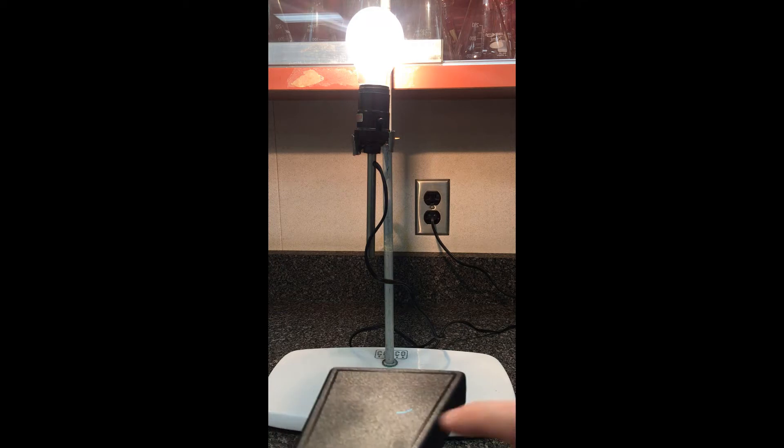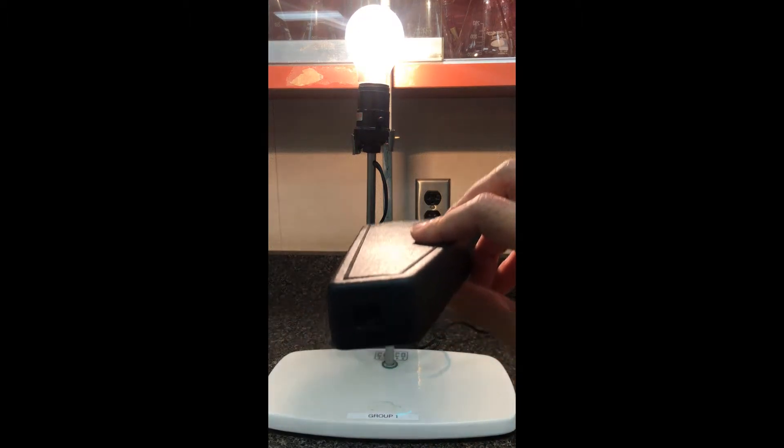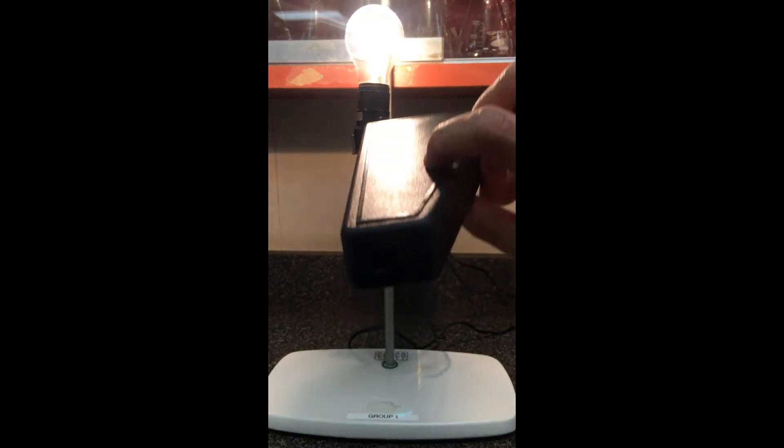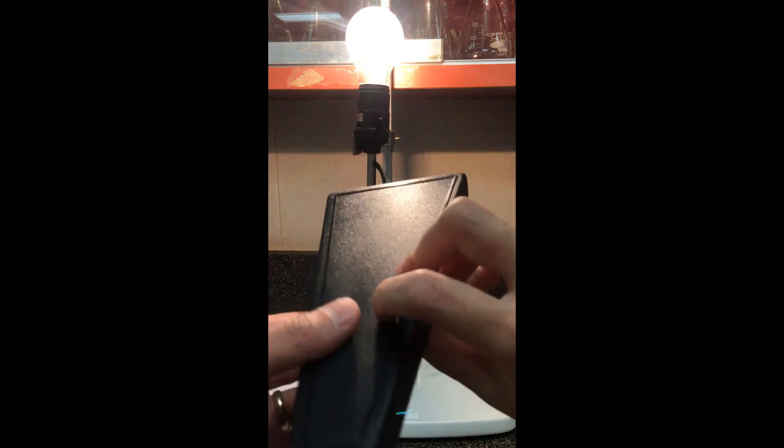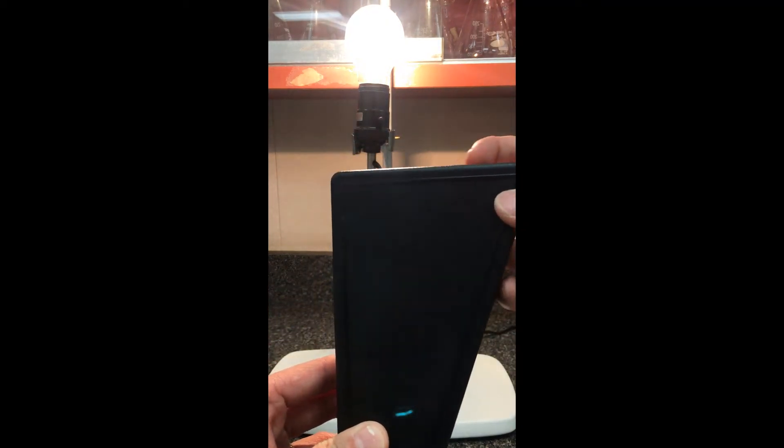We're going to look through the spectroscope. We're going to look through the narrow end, point the slit towards the light source, and then we're going to look inside the spectroscope.